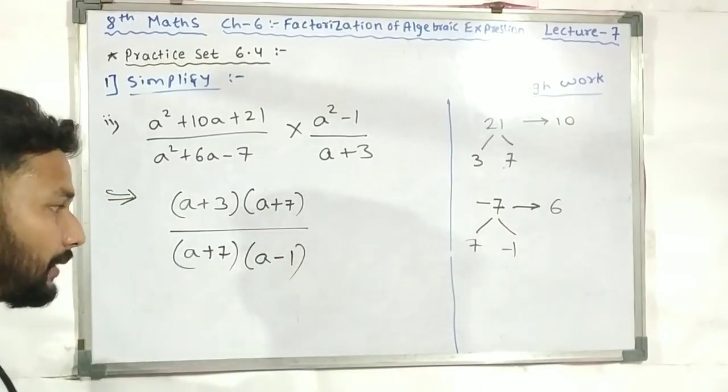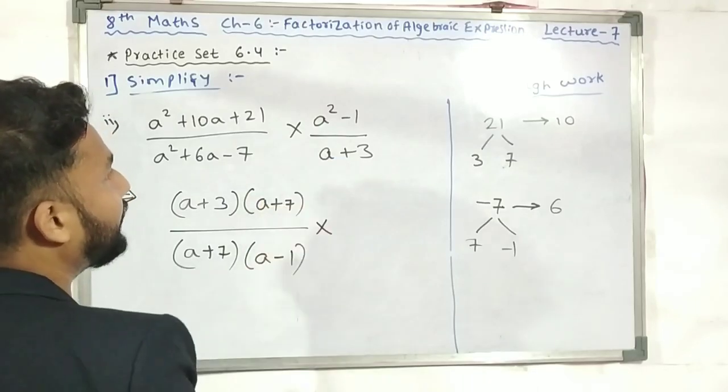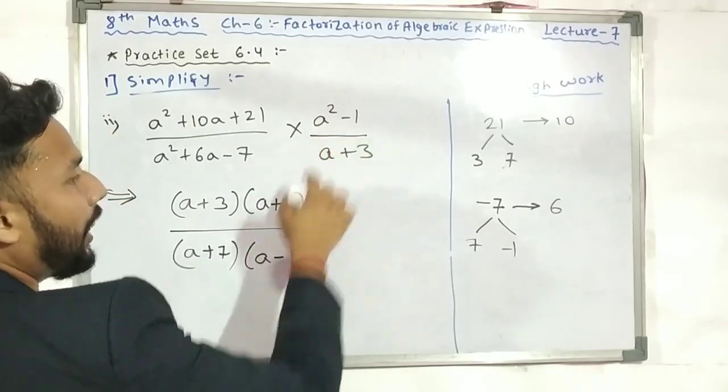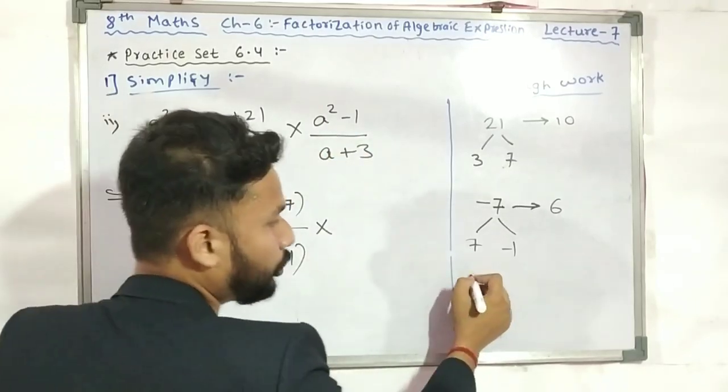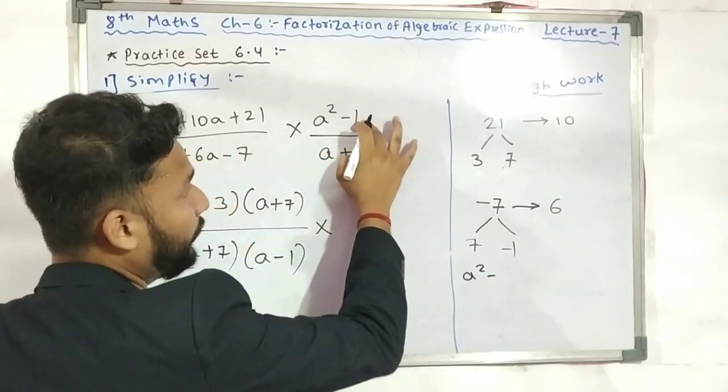Now we have to go to the next step. We have to write a multiply in the middle. Now a²-1. How can we write a²-1? We can write it as a²-1². A²-b² formula gives us (a+b)(a-b), so a²-1 = (a+1)(a-1).